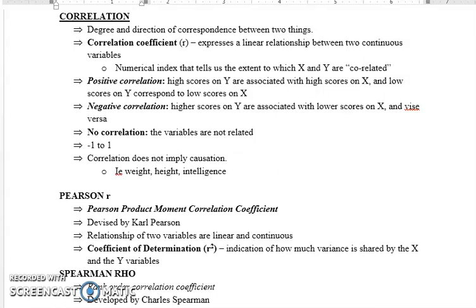Zero correlation کی زیادہ مناسب example height اور intelligence ہے۔ Height کا intelligence کے ساتھ کوئی تعلق نہیں ہے — کم height والے لوگ بھی intelligent ہو سکتے ہیں اور زیادہ height والے بھی۔ اسی طرح weight اور intelligence کا بھی کوئی تعلق نہیں۔ البتہ weight اور height کا direct positive relationship ہوتا ہے — جیسے height زیادہ ہوتی ہے، weight بھی زیادہ ہوتا ہے۔